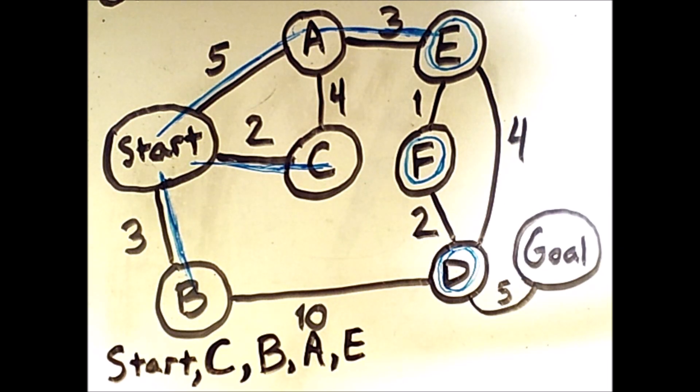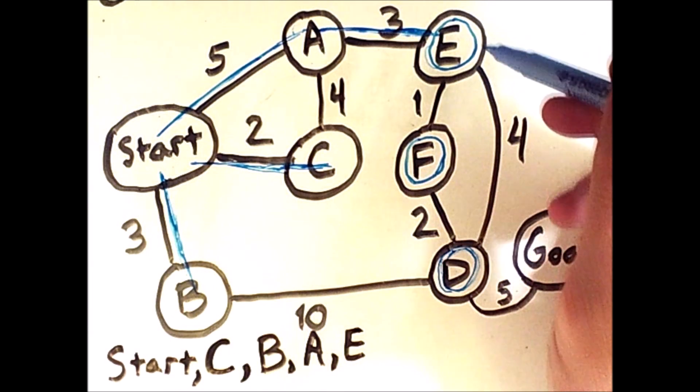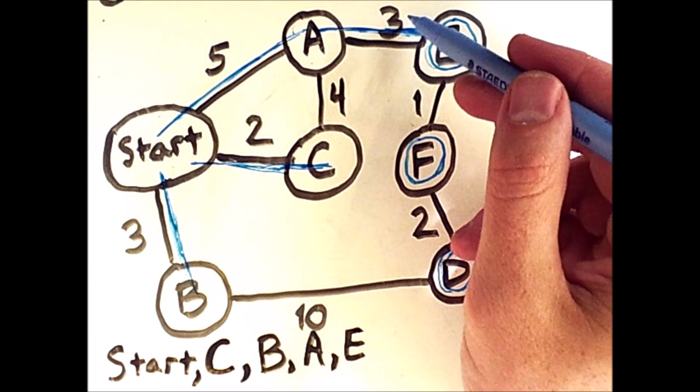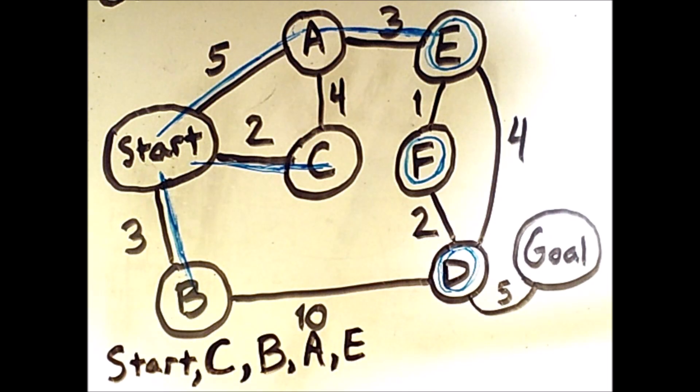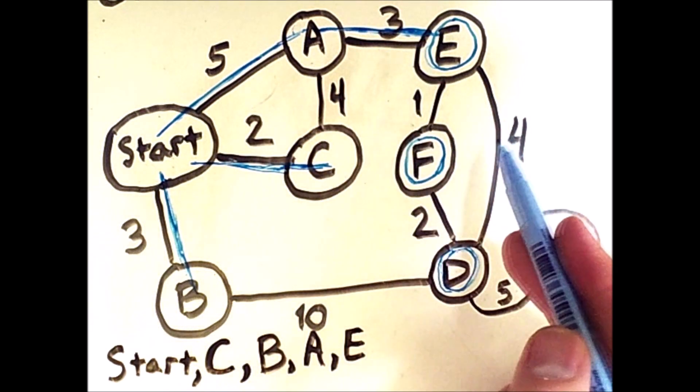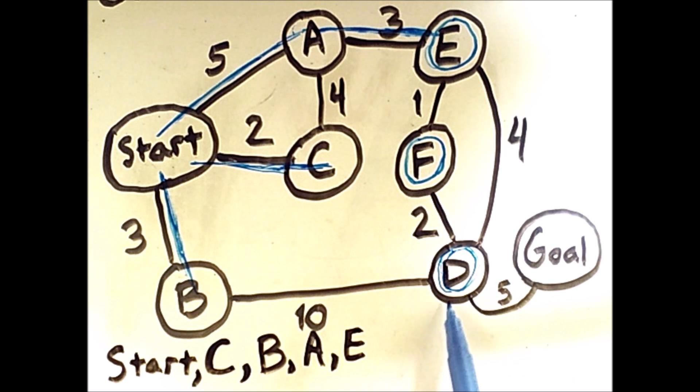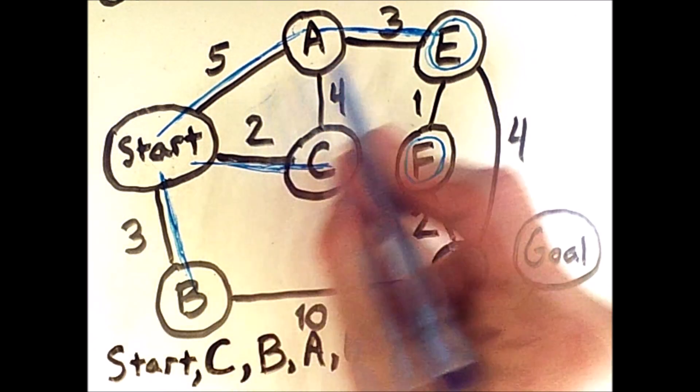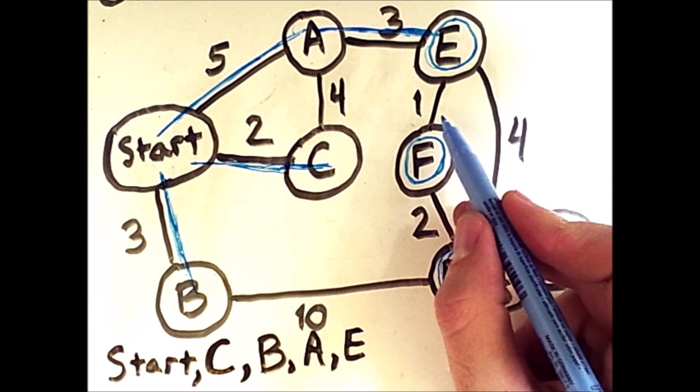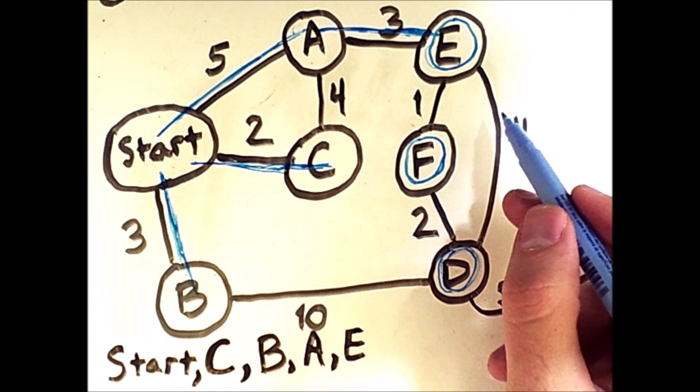And if we do the math, we'll see that going to D from E is going to be 4 plus 3 plus 5. That's 5, 6, 7, 8, 9, 10, 11, 12. That is less than the 13 that it would take to go through B. However, 5 plus 3 plus 1, which is 9, is even less than that.